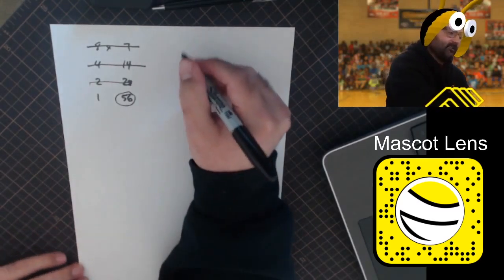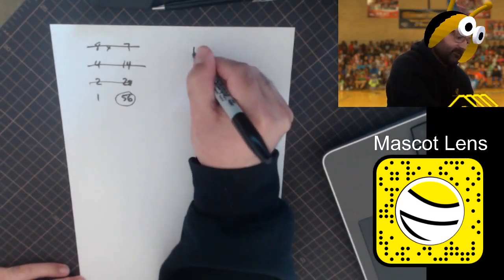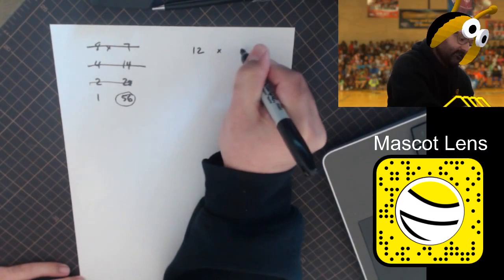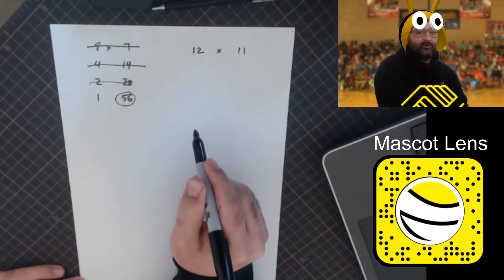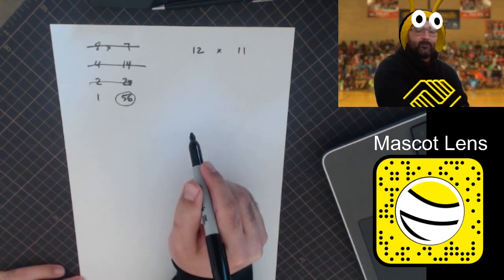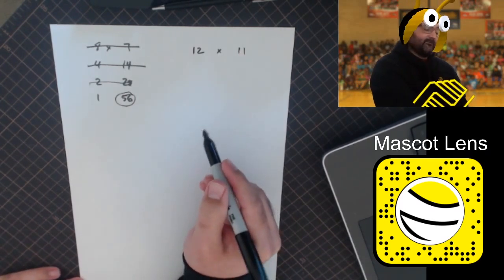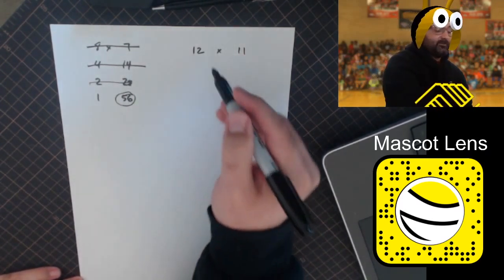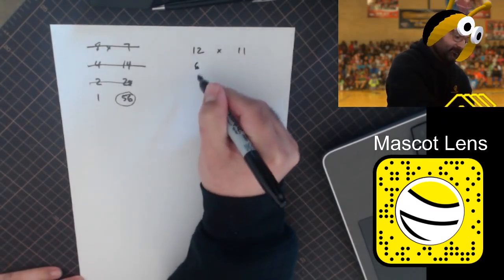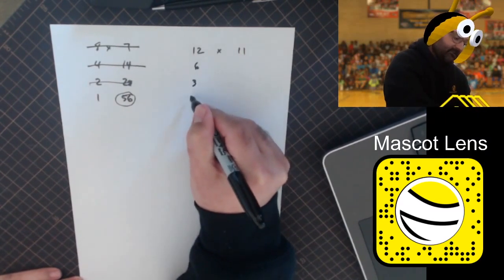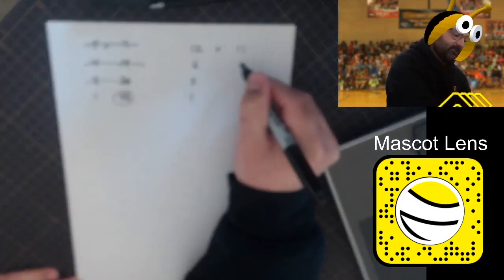Going with another example: 12 times 11. These are two examples that kids sometimes have problems with when multiplying. So we'll just change how it works. It's the same process. Divide by two, leaving out the remainder until we get down to one.